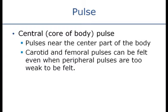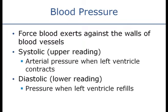Pulses near the center of the body are called central pulses — they include the carotid and femoral pulses. Peripheral pulses are out in the periphery, away from the core. The force of blood exerted against the wall of the vessel is known as blood pressure. We measure it in a top number and a bottom number. The top number is the systolic pressure — the pressure in the arteries when the left ventricle contracts. The bottom number is diastolic — the pressure when the left ventricle refills, and more importantly, the baseline pressure in the arteries at all times. The higher the diastolic, the harder the left ventricle has to work.